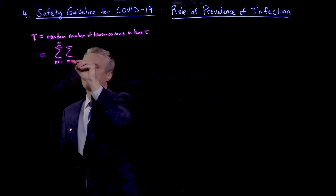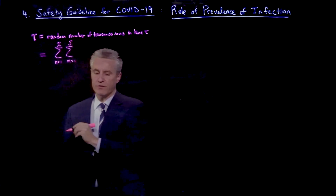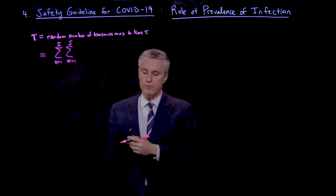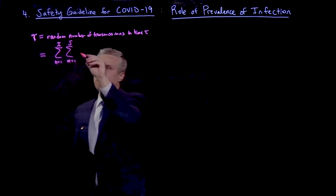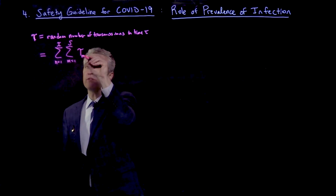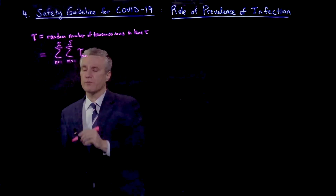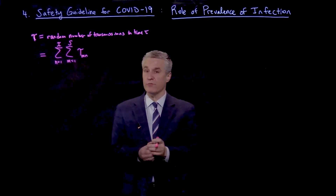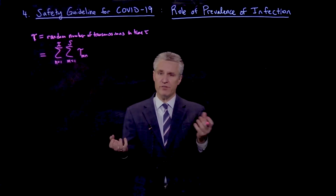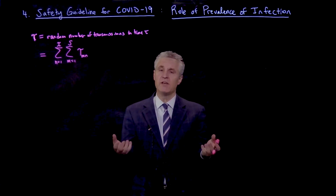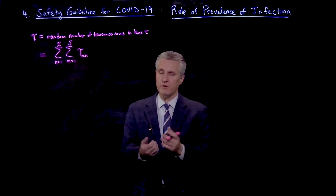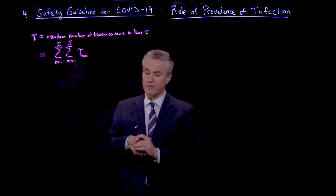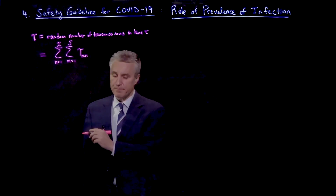There are S susceptible people, which also is a random number. And then there is a transmission rate, which is the random number of transmissions per pair. So if you take an infected person and a susceptible person, in this time there's a certain probability of transmission, which is described by this random variable T_mn.